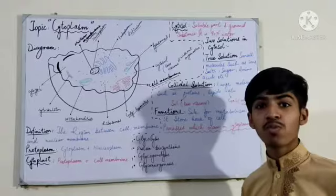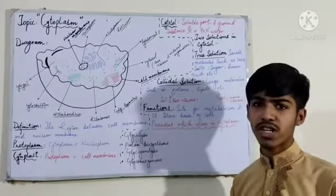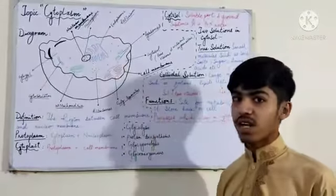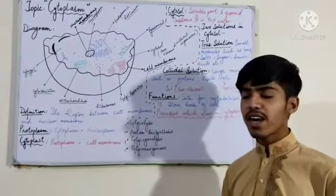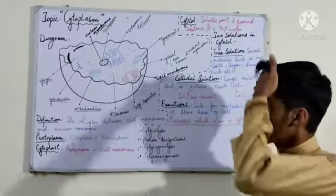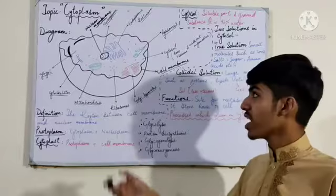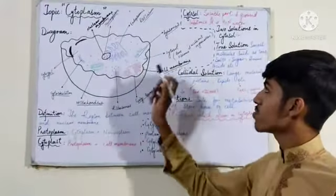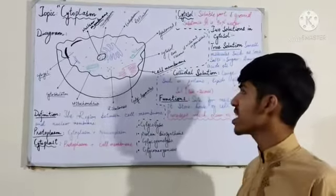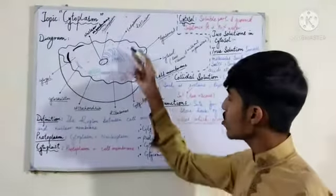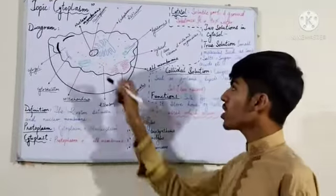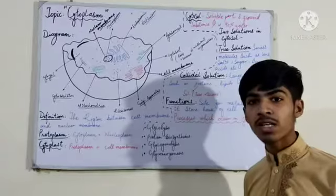Now let's come to the functions of cytoplasm. The functions of cytoplasm are very important. It is not just a solution or fluid. All the organelles are present inside it, and every organelle is very very important for life. Every organelle has its own main function — mitochondria is the powerhouse of the cell, ribosomes are making proteins, lysosomes are doing digestion inside the cell, endoplasmic reticulum and so on. Every organelle is very important and all are present in the cytoplasm.